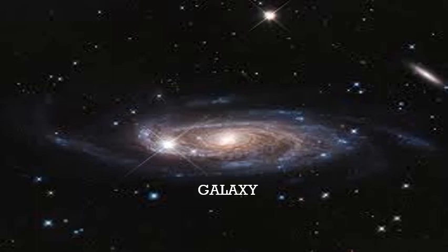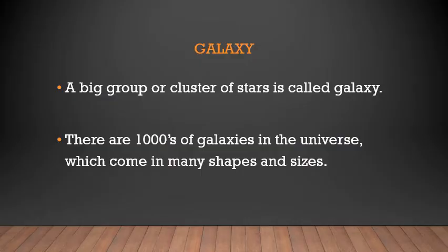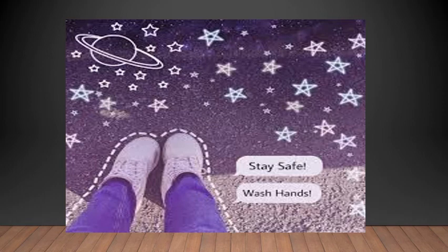Next we will see what is a galaxy. A big group or cluster of stars is called a galaxy. The speciality is that we live in a galaxy — our solar system is inside a galaxy. There are thousands of galaxies in the universe, which come in many shapes and sizes. In the next video we will learn about the different galaxies and what is the name of the galaxy that we are living in.